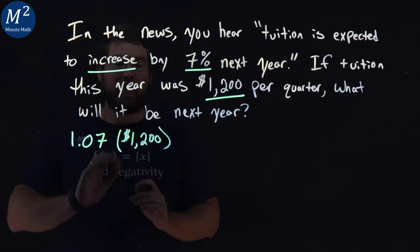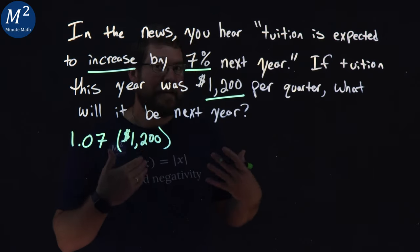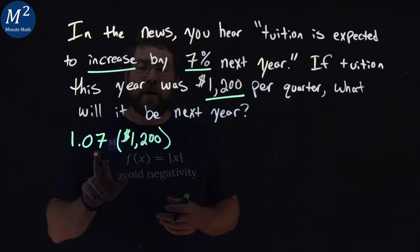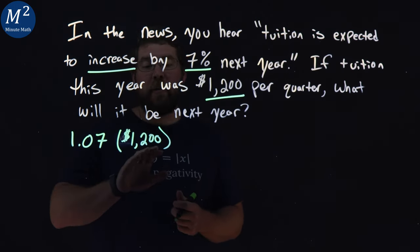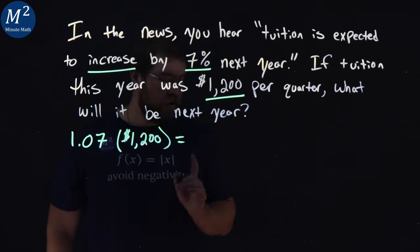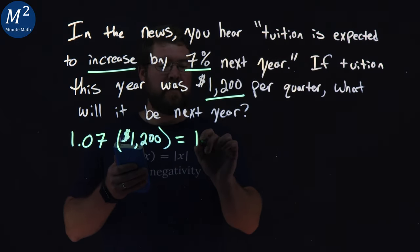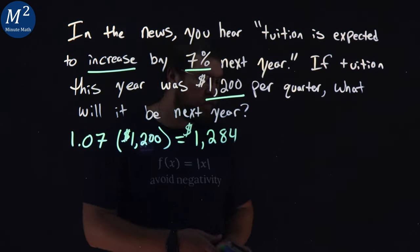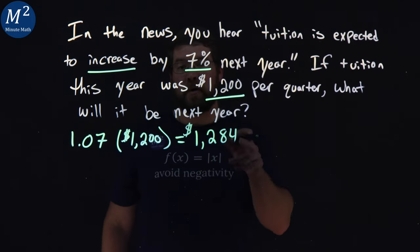If we ignore the 0.07 and just multiply by 1, we get the same exact amount as last year. The 0.07 shows that 7% increase, and we won't forget the initial amount. So if we multiply that out, we get a value of — using my calculator — 1,284. The tuition for next year, if it went up 7%, is $1,284.